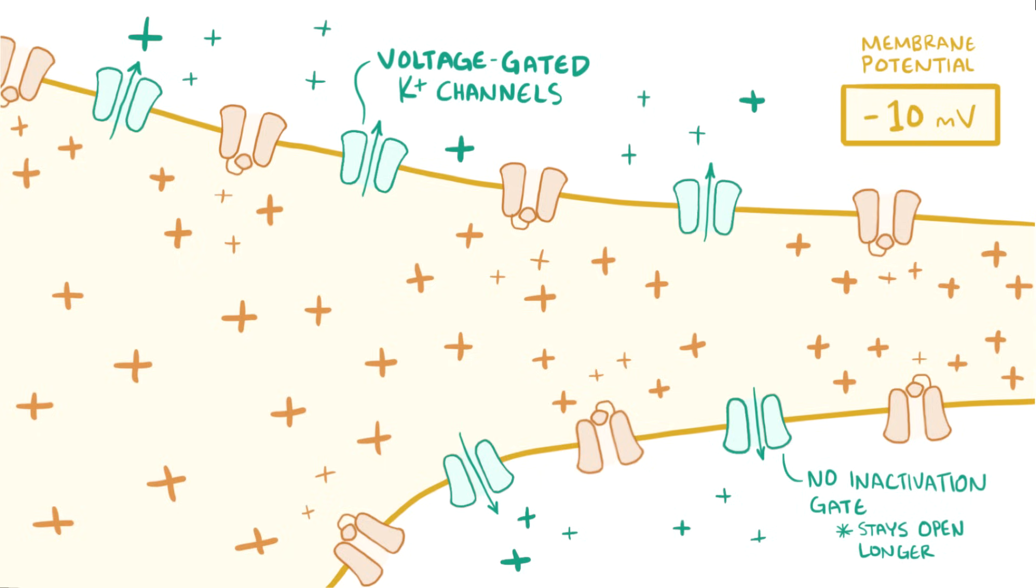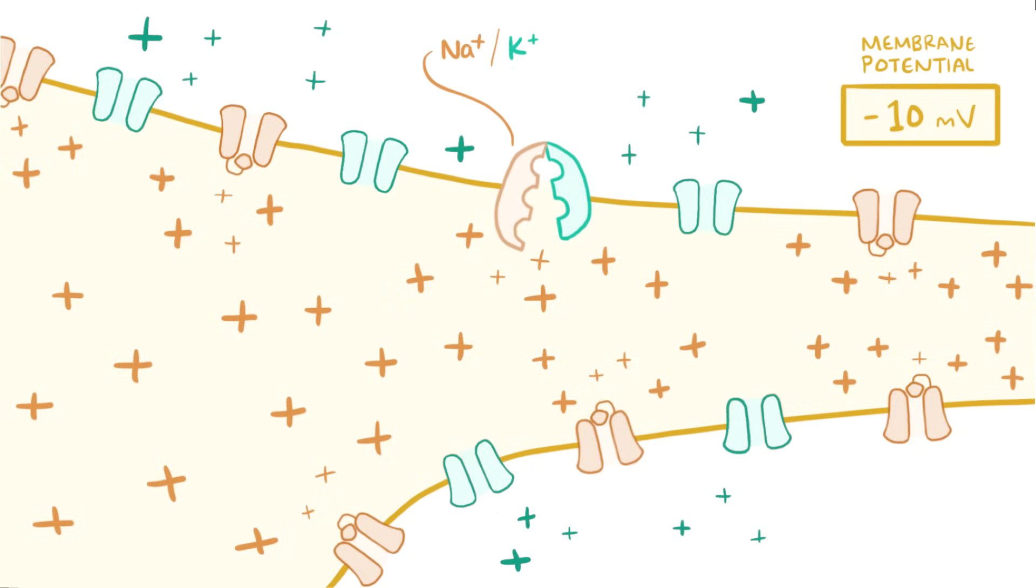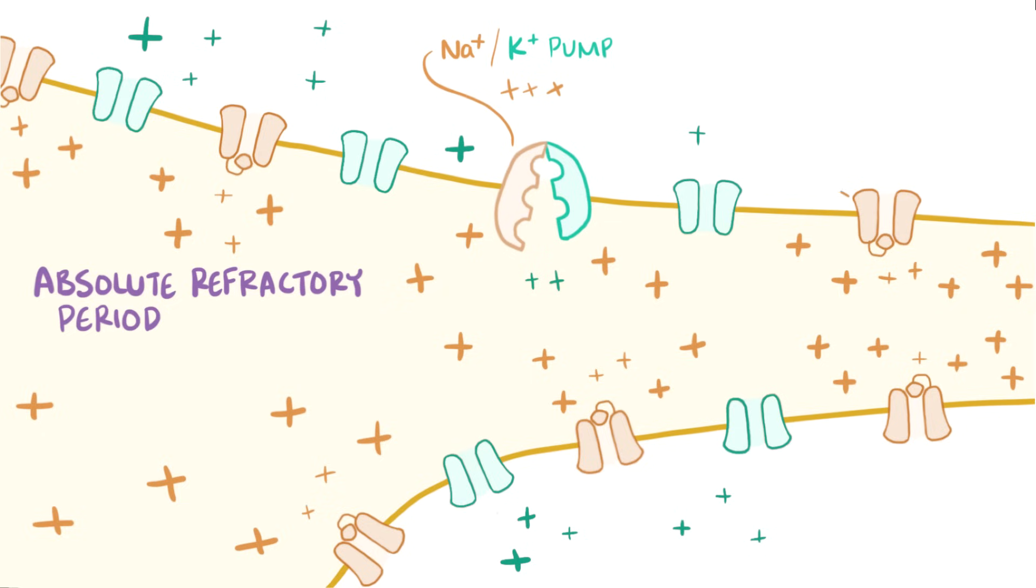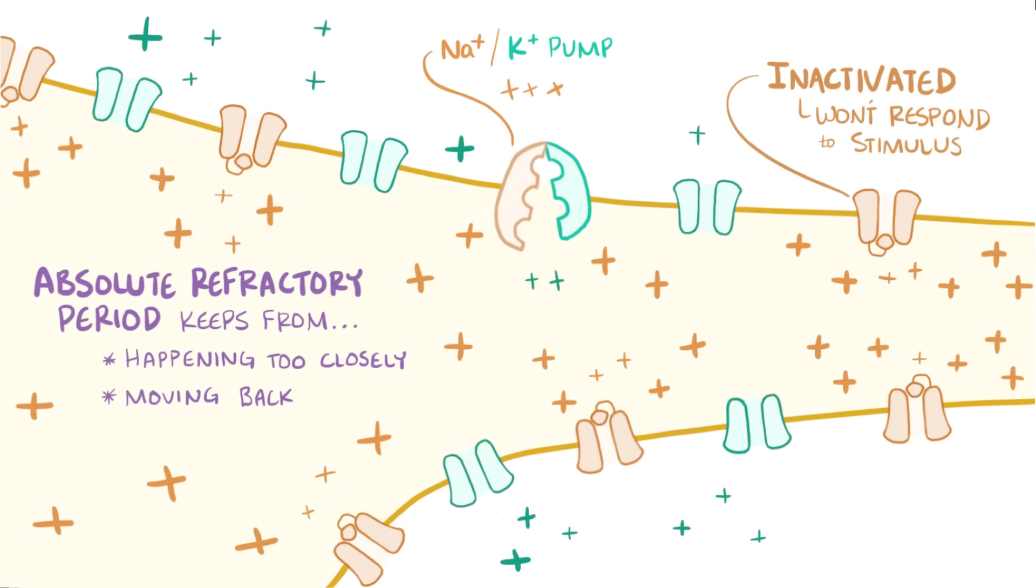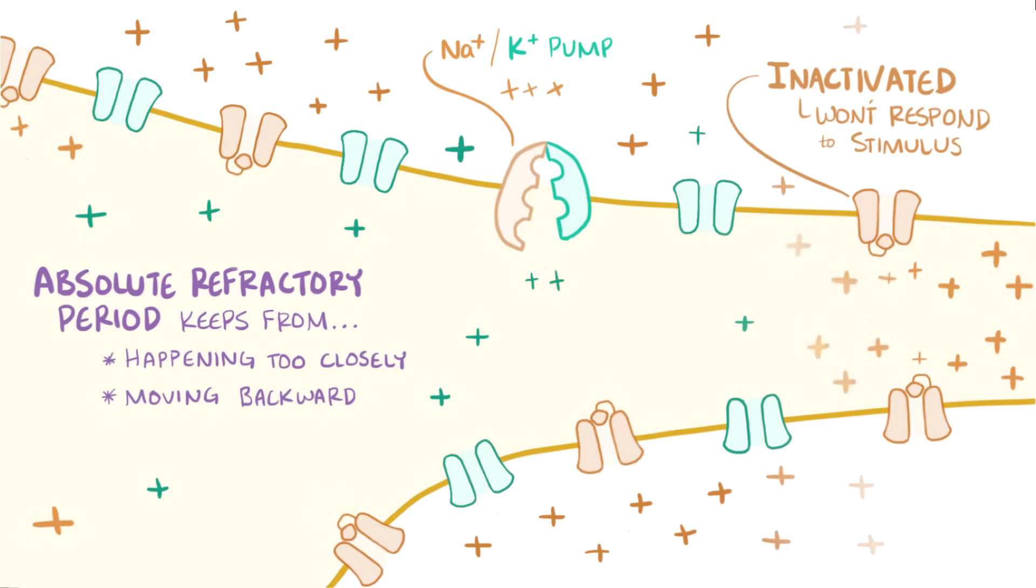During this repolarization phase, the cell also relies on the sodium-potassium pump, which is an active transporter that moves three sodium ions out of the cell and two potassium ions into the cell. It's during this repolarization phase that the cell is in its absolute refractory period, since the sodium channels are inactivated and won't respond to any amount of stimuli. This absolute refractory period keeps the action potentials from happening too close together in time, and also keeps the action potential moving in one direction. The combined efforts of this pump and the extended opening of the potassium channels result in a small period of overcorrection, where the neuron becomes hyperpolarized relative to the resting potential.